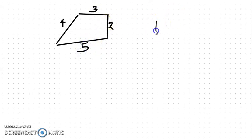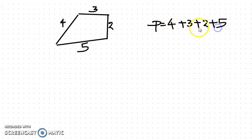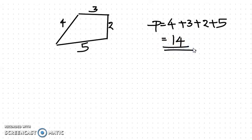The perimeter of this polygon is found by adding all sides: 4 plus 3 plus 2 plus 5. 4 plus 3 is 7, 7 plus 2 is 9, 9 plus 5 is 14. So this way we can find the perimeter by adding the measurement of each side.